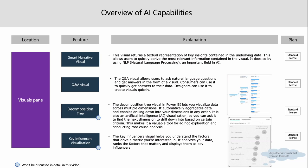The decomposition tree is useful when there are multiple levels to a data, allowing Power BI to show this relationship and hierarchy visually. It's useful in a business context when doing accounting — for example, going from revenue all the way to EBITDA and then to net profit.